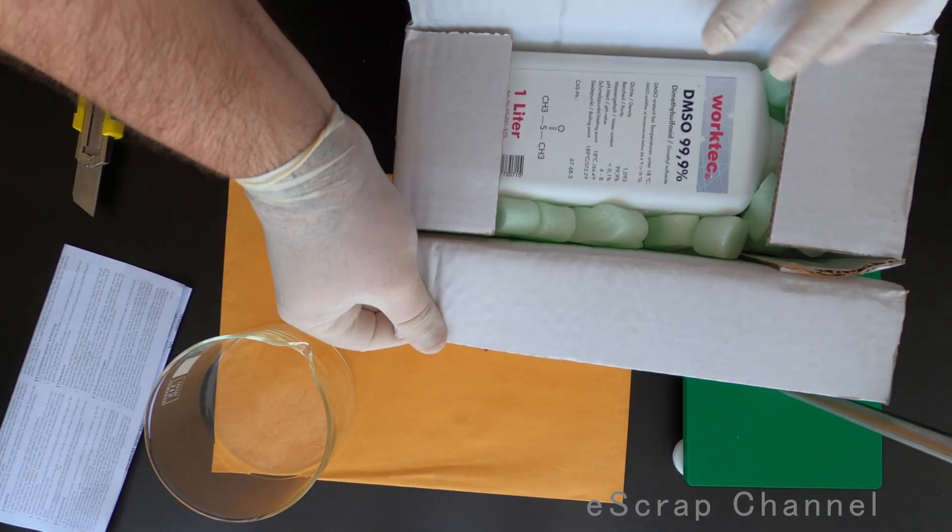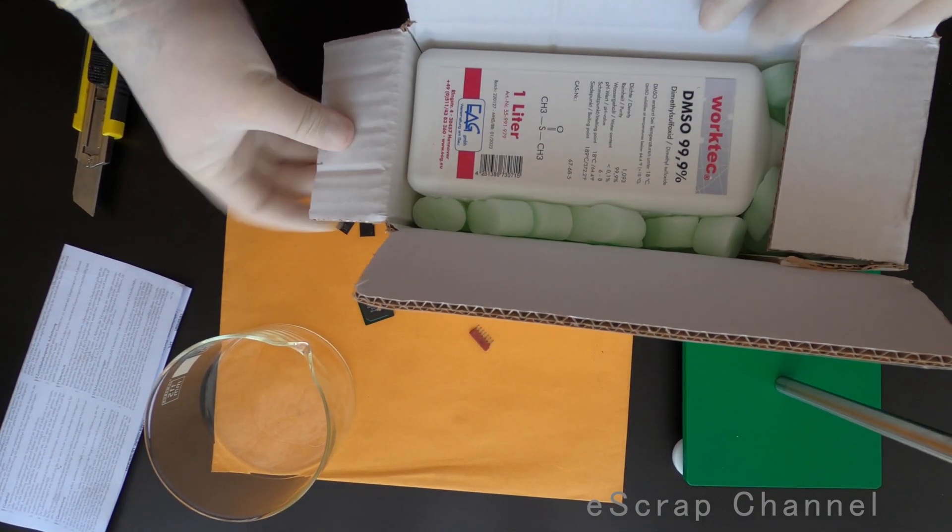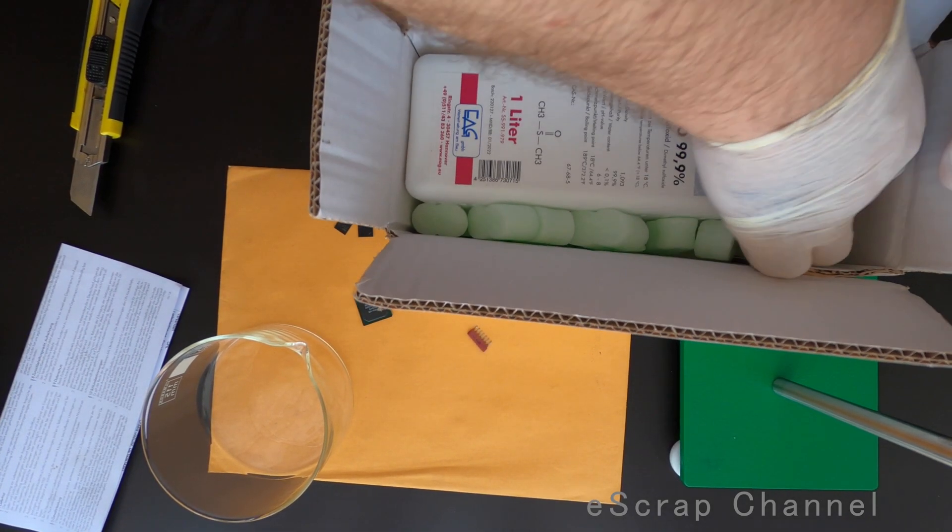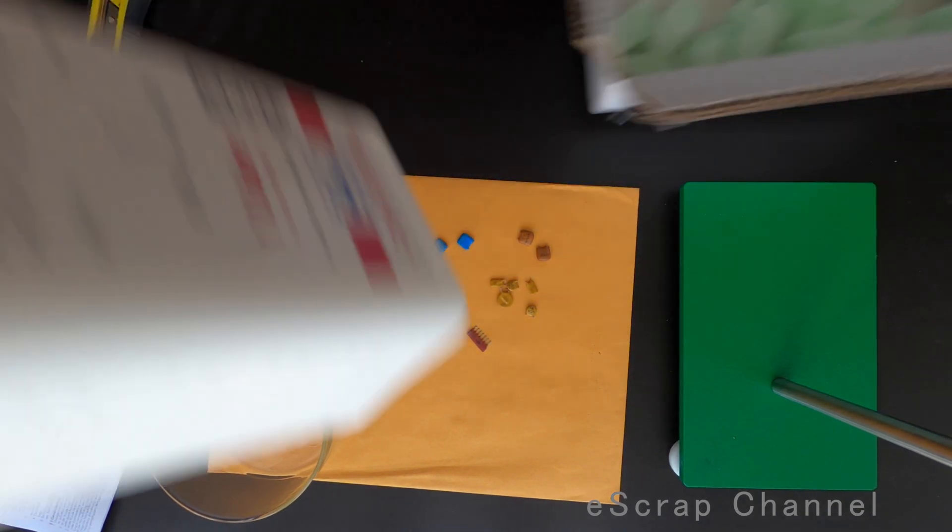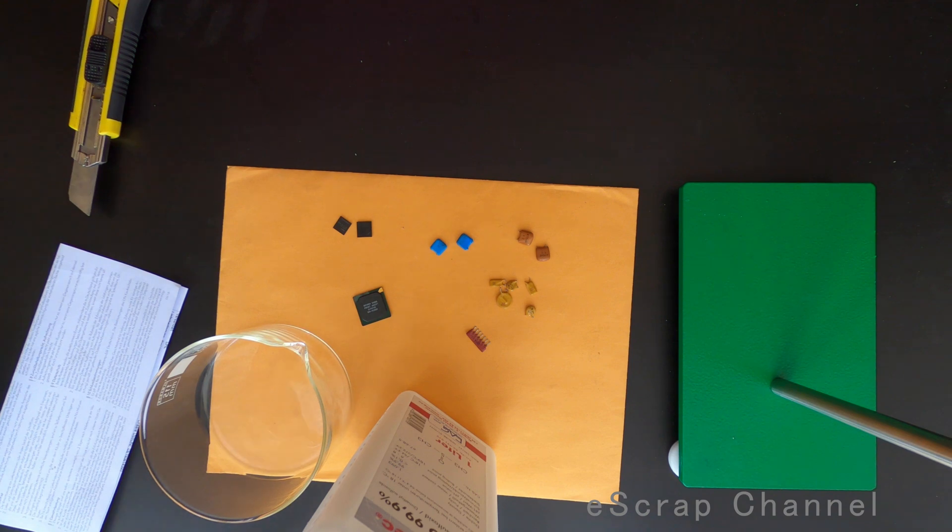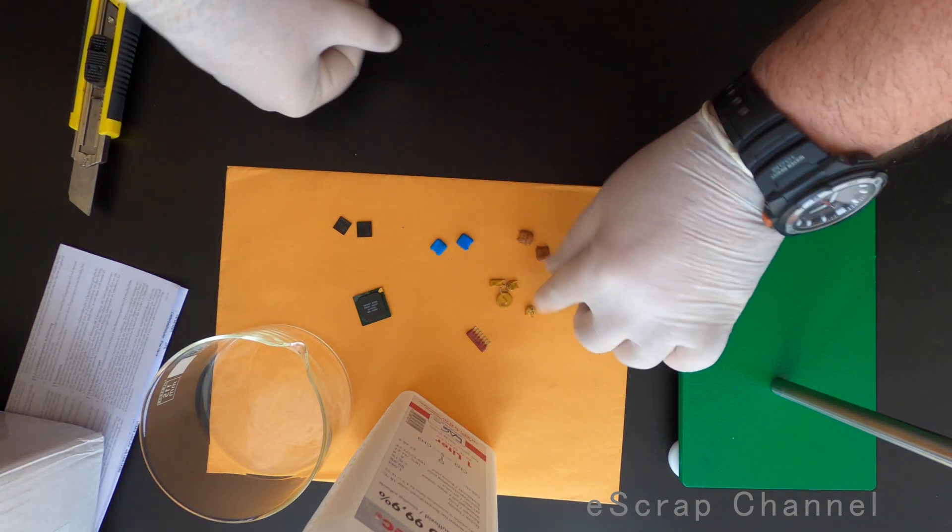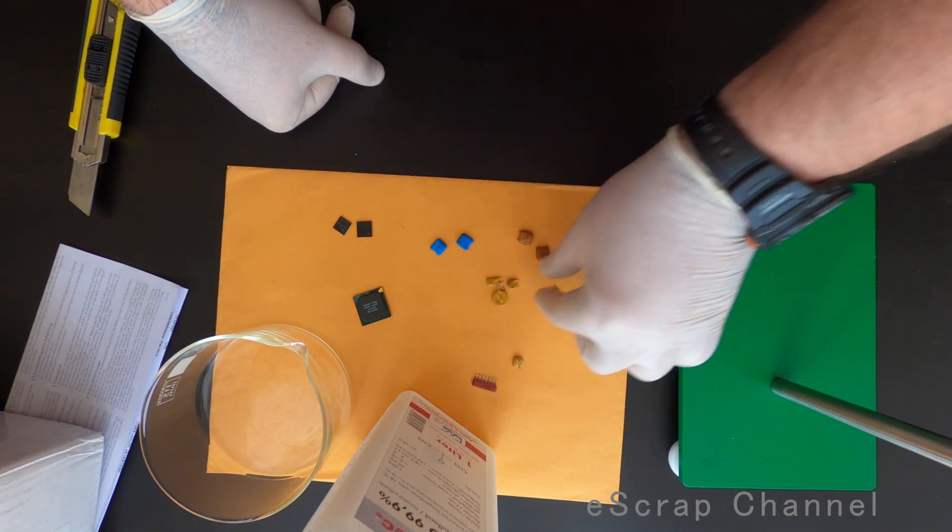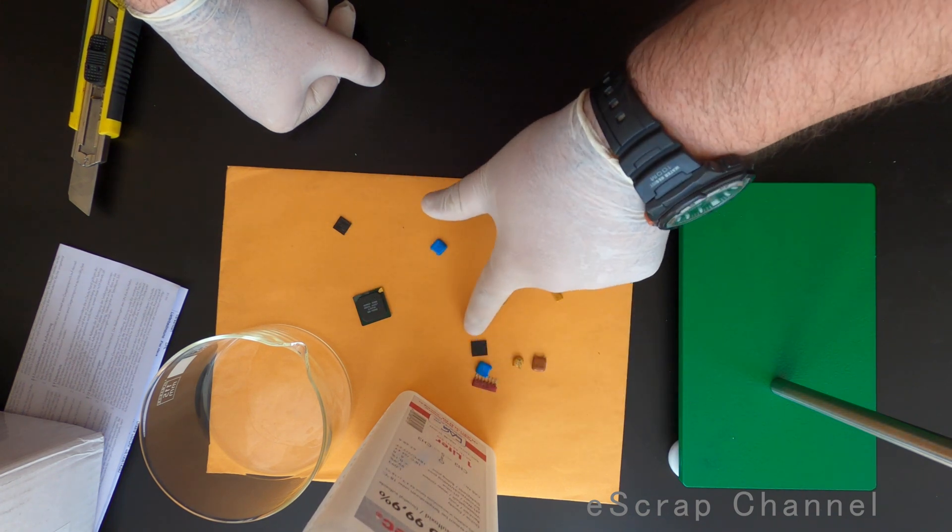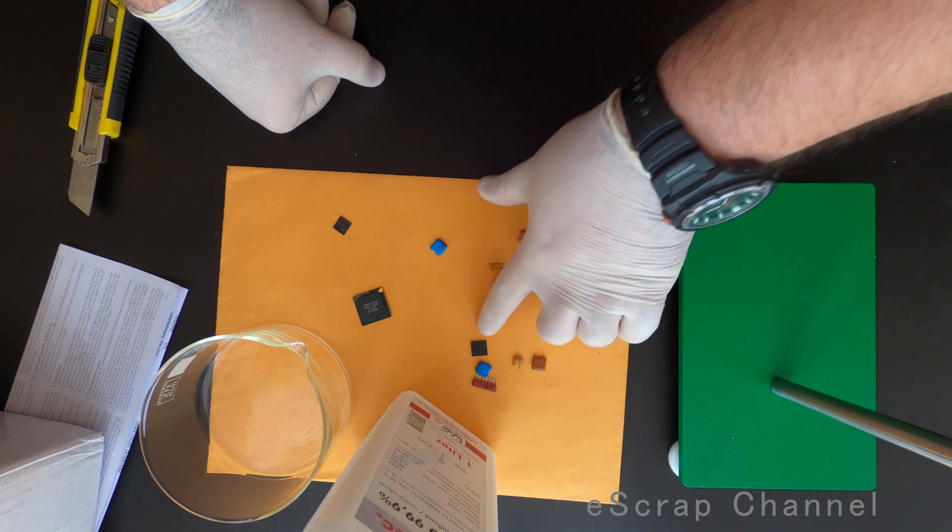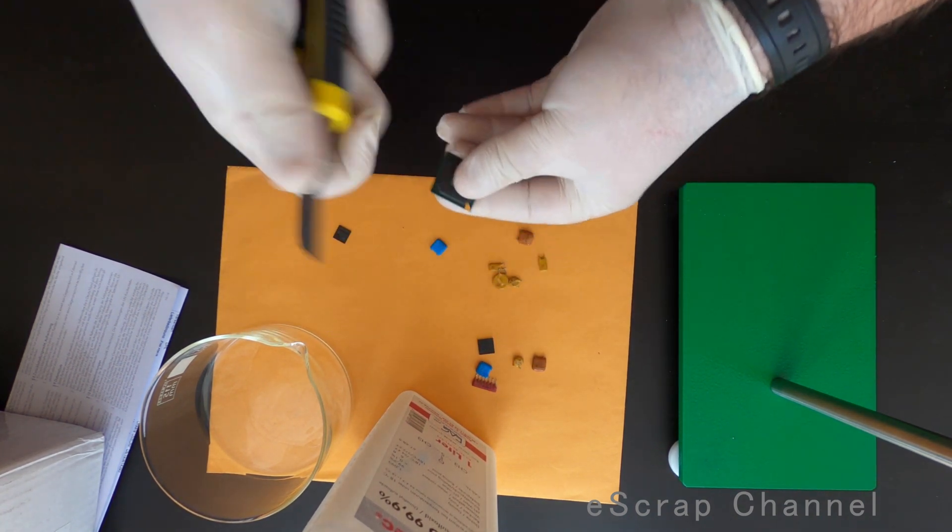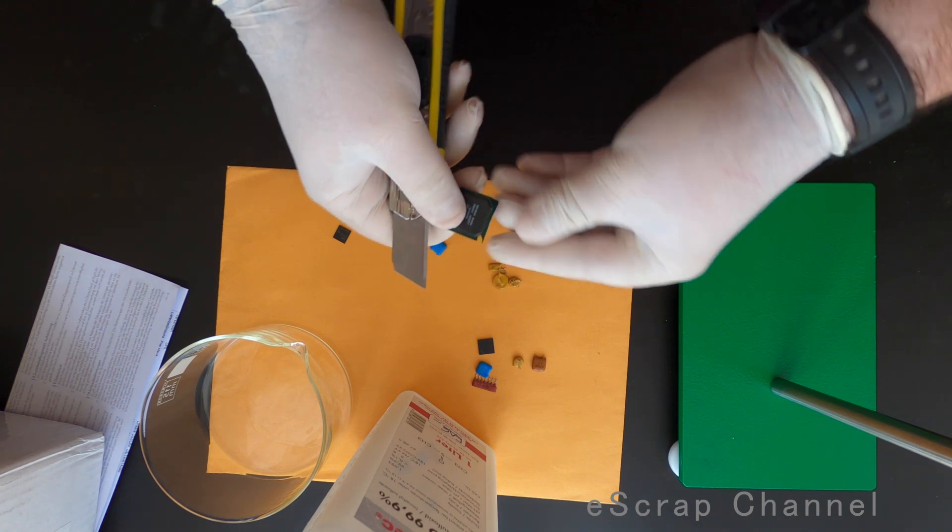That's my one liter DMSO 99.9%. I'll take the bottle out and let's see. So I will pick one element of each type and I'll put even one BGA from RAM and I will also remove the cap of this BGA and put it.